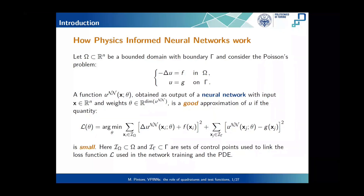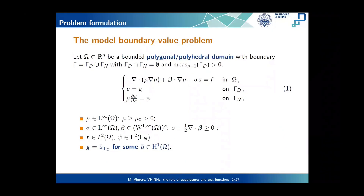To ensure some sort of control, we need to change the setting a little bit, considering a variational physics-informed neural network. We will also use an interpolation operator in order to stabilize the neural network. One can choose to consider more complex problems, for instance, changing the definition of the residuals to introduce nonlinearities or adding parameters in the input of the neural network together with spatial or temporal coordinates. However, in this presentation, we simply focus on classical second-order elliptic problems with known parameters.